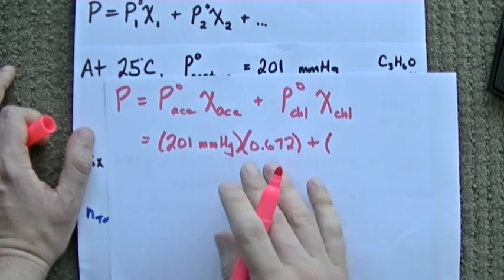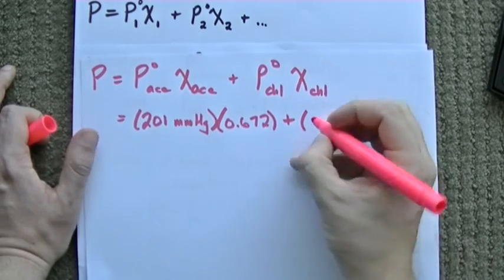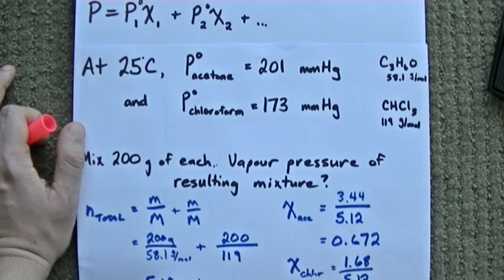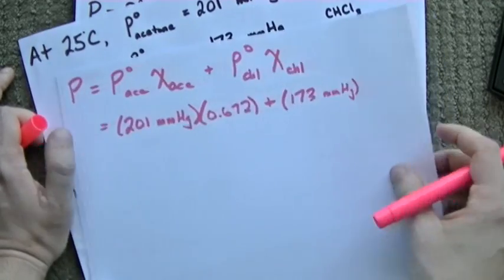And we add the vapor pressure of chloroform, which is 173 mmHg times the mole fraction of the chloroform, that's 0.328.